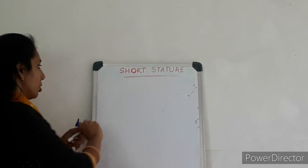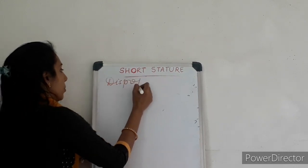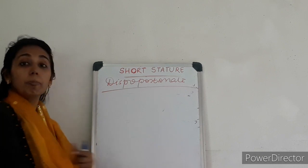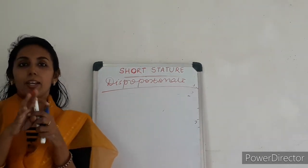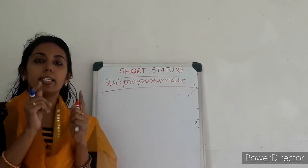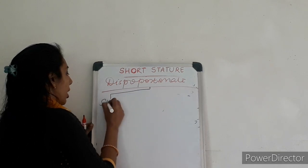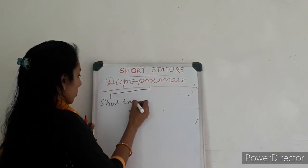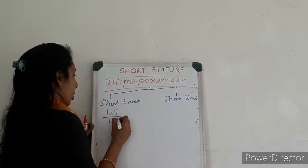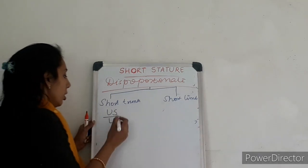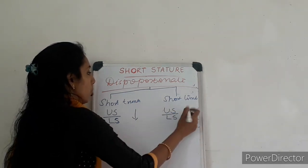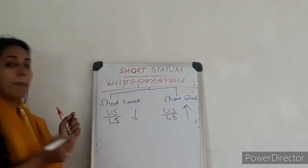Now coming to the causes of disproportionate short stature. Disproportionate means the upper segment to lower segment ratio is altered. The upper segment to lower segment ratio is 1.7 to 1.9 at birth, 1.3 to 1 at 3 years, and 1 to 1 at 7 to 10 years. We have two causes: short trunk dwarfism and short limb dwarfism. In short trunk dwarfism the upper segment is less so the ratio is decreased, whereas in short limb dwarfism the limb is very short so the ratio is increased.